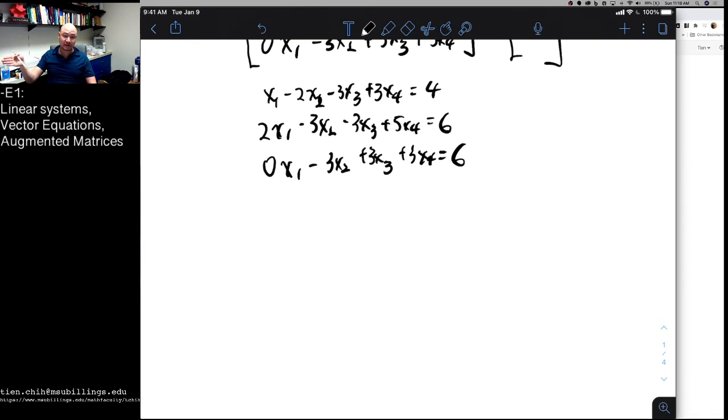So what we'll have is this first row, which corresponds to x1, x2, x3, x4, and we draw this bar here to separate the variables on the one side.